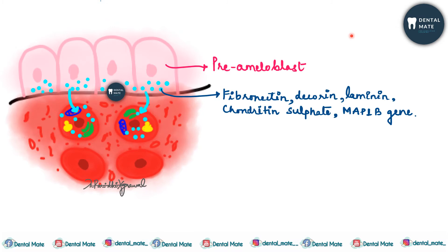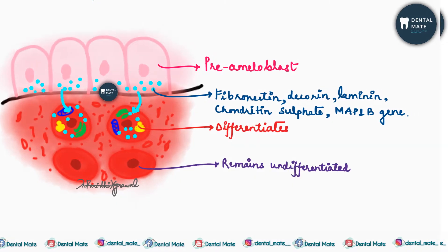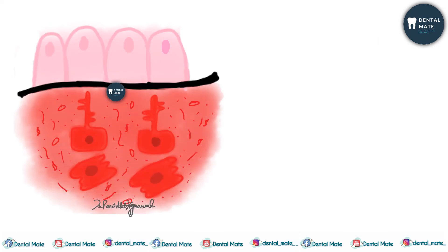The cells with organelles differentiate and become columnar odontoblasts, while their counterparts remain undifferentiated as sub-odontoblastic cells. The columnar odontoblast cells begin collagen production and have processes in the apical end to contact with the basal lamina.